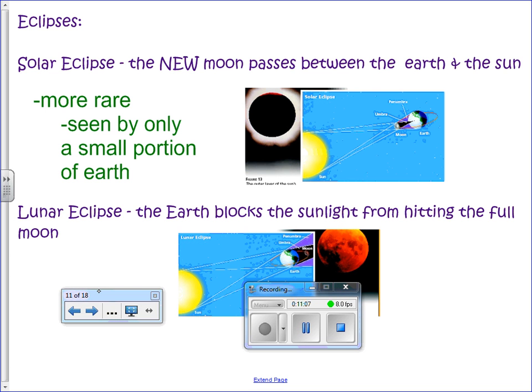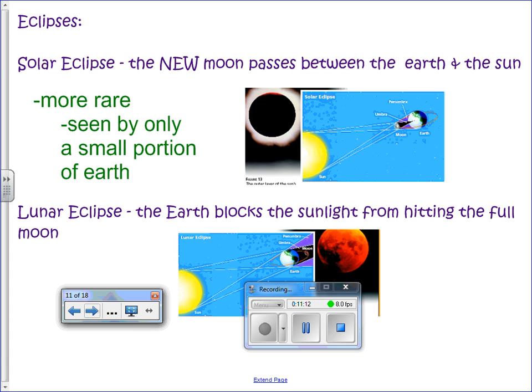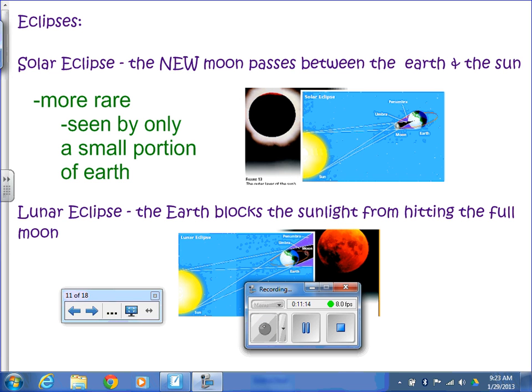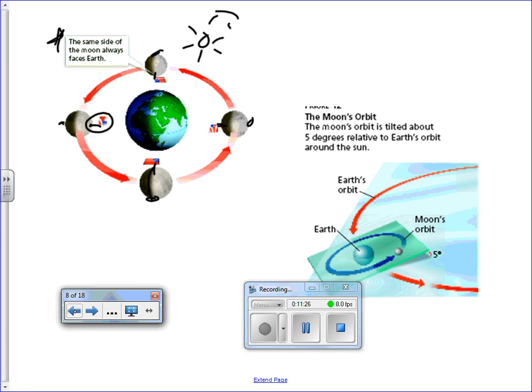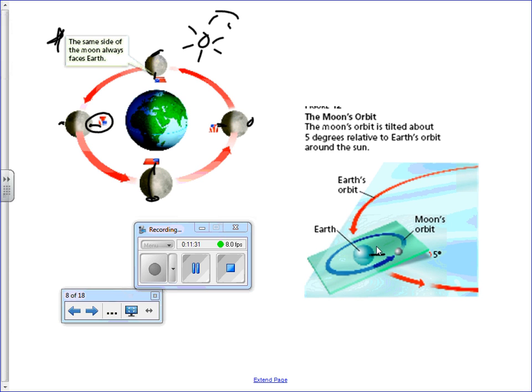Are we ready to go on to eclipses? So an eclipse is when eclipse means to shadow over or to block out. If the moon, if we went back to this picture, if the moon was directly around kind of Earth's equator, we would get an eclipse every full moon and every new moon. But the moon is actually tilted on this axis, so we don't get eclipses every month.